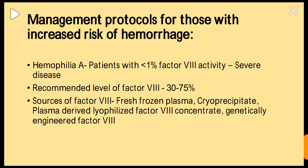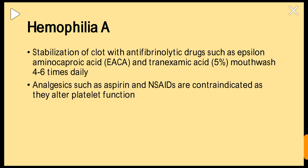For hemophilia A patients with Factor VIII deficiency: if less than 1% factor is present, deficiency is severe. The recommended level should be brought to 30–75% using fresh frozen plasma, cryoprecipitate, plasma-derived lyophilized Factor VIII concentrate, or genetically engineered Factor VIII. Stabilization with anti-fibrinolytic drugs such as EACA (epsilon-aminocaproic acid) and tranexamic acid 5% mouthwash four to six times daily is given. Analgesics such as aspirin and NSAIDs are contraindicated as they alter platelet function.